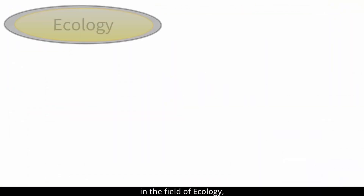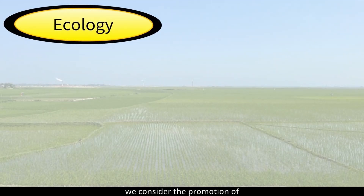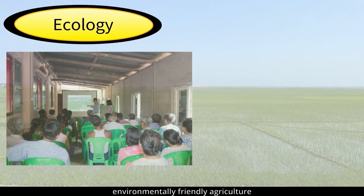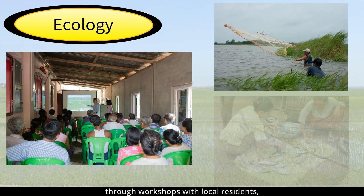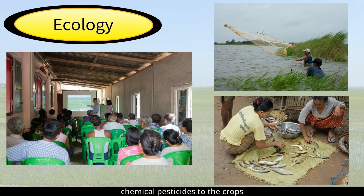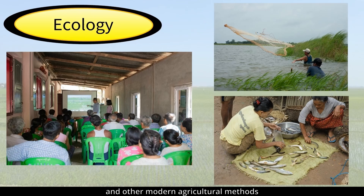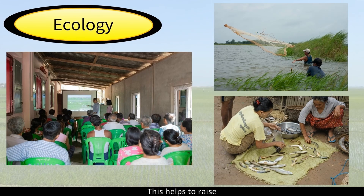For example, in the field of ecology, we consider the promotion of environmentally friendly agriculture through workshops with local residents. We teach the impact of chemical pesticides on crops, fisheries, and other modern agricultural methods on rural ecosystems. This helps to raise their environmental awareness.